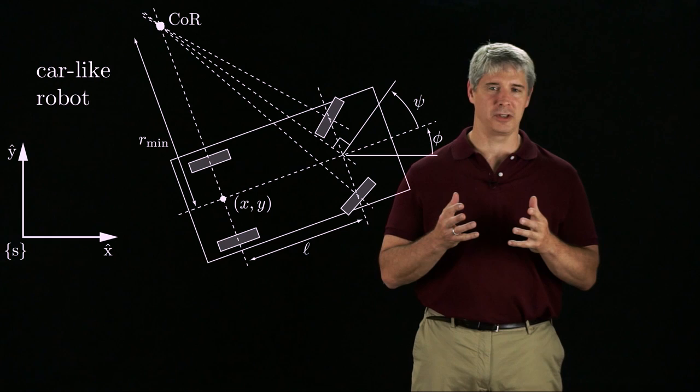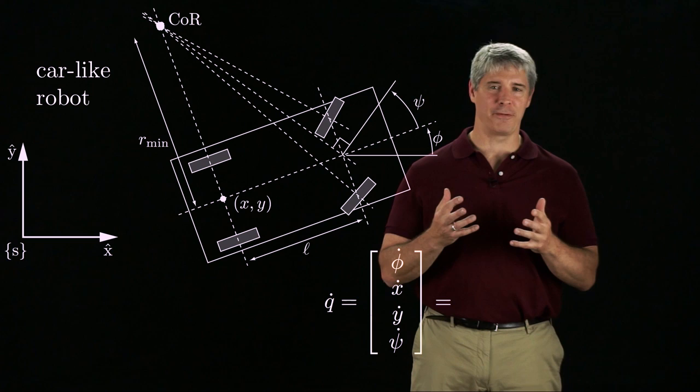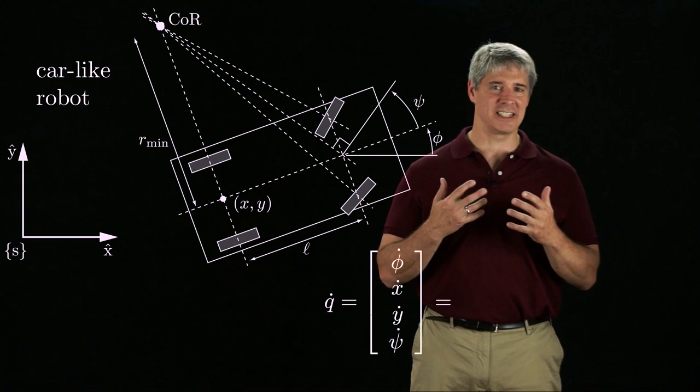Finally, a car-like robot uses Ackermann steering of the front wheels to create a center of rotation somewhere along the axis of the unsteered rear wheels. If we define the four-dimensional configuration to be the heading angle phi, the position x-y of a point halfway between the rear wheels, and the steering angle psi,